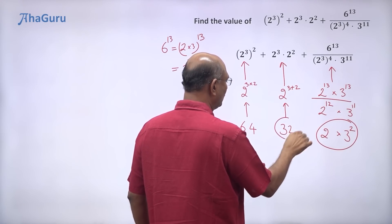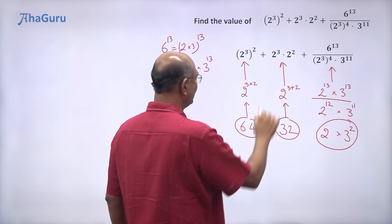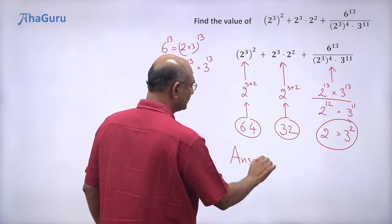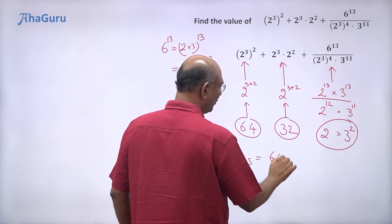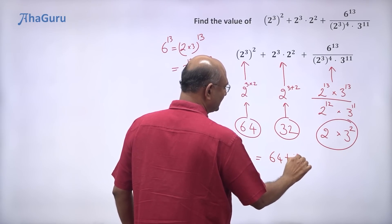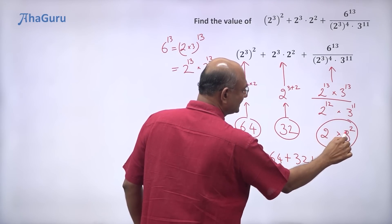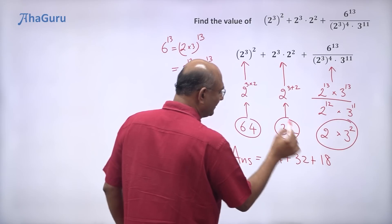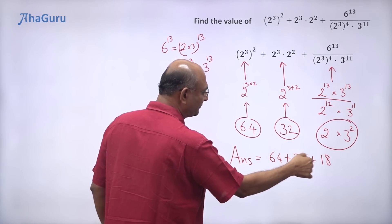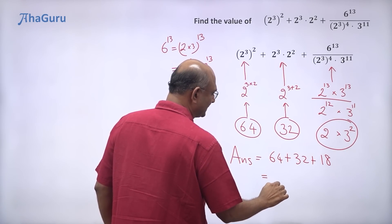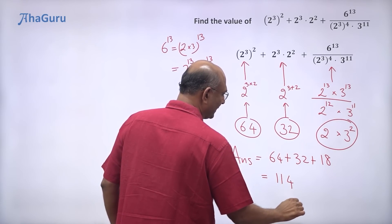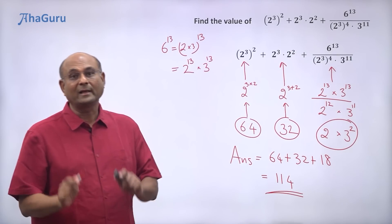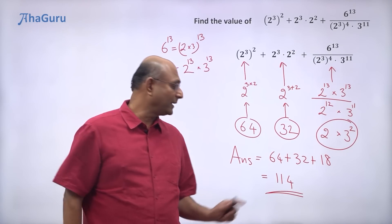So we have 64, plus 32, plus 2 into 3 squared which is 2 into 9, equal to 18. So 18 plus 32 is 50, and 50 plus 64 is 114. The value of that expression is 114.